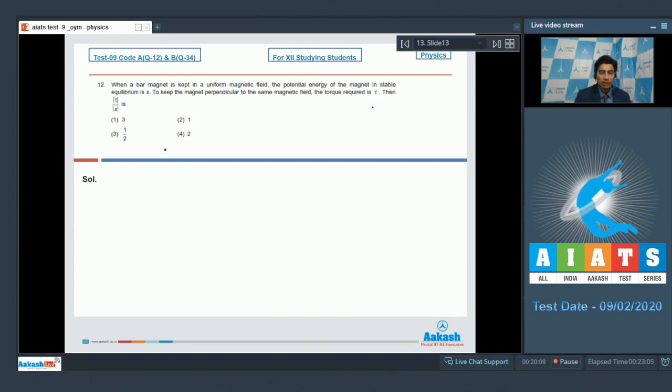In this particular case, the potential energy of the magnet in the stable equilibrium is equal to minus mu B. So this is given to be equal to X. Here, mu is the magnitude of the magnetic dipole moment and B is the magnetic field. The torque in the case when the magnet is kept perpendicular to the magnetic field is equal to mu B. We can see that the mod of X is equal to mu B, whereas the mod of torque is also equal to mu B. And hence, the division of these two quantities would yield a value 1, which makes option number 2 as the correct answer.